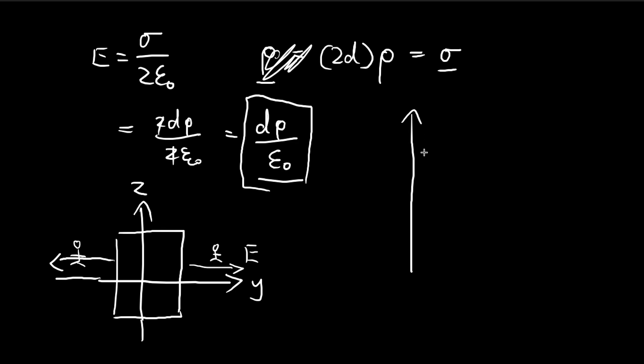So immediately, since what we're looking for is the graph of the electric field with respect to y. So at this point, this point is d, this point is negative d. So the entire thickness is 2d.